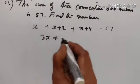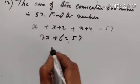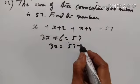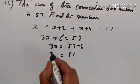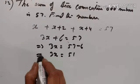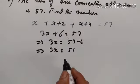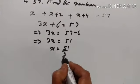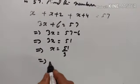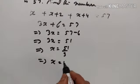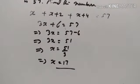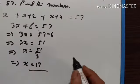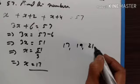3x plus 6 is equal to 57. 3x is equal to 57 minus 6, that is 51. 3x is equal to 51, x is equal to 51 divided by 3, x is equal to 17. The three odd numbers are 17, 19 and 21.